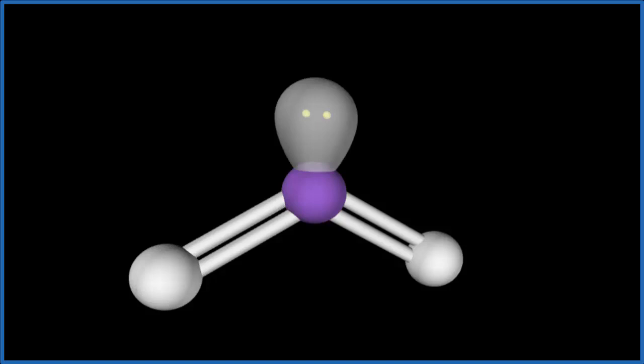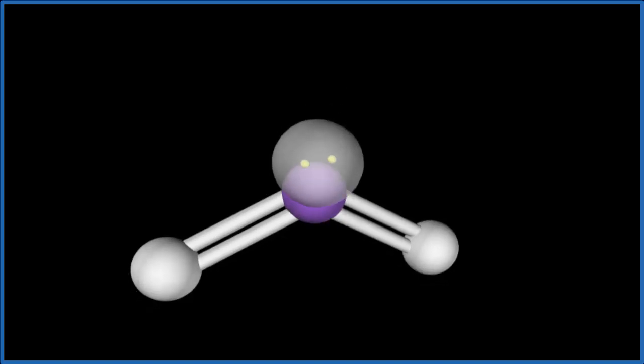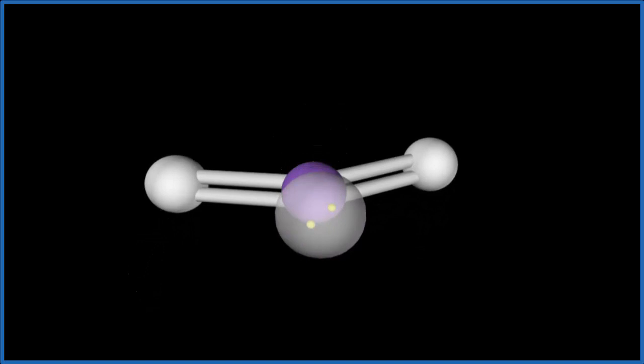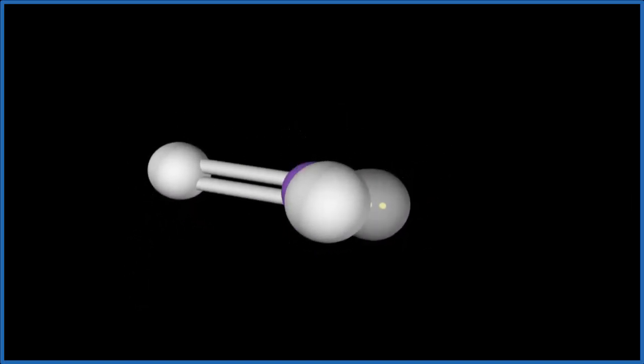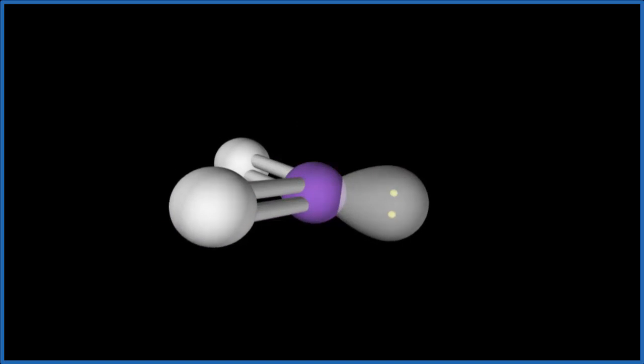But when we're talking about electron geometry, we count everything. And all of this is in a plane. All three things are in a plane. That means we end up with a trigonal planar electron geometry.